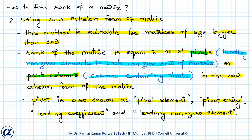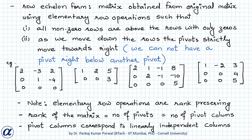The row echelon form of a matrix is obtained from the original matrix using elementary row operations such that all non-zero rows are above rows with only zero elements, and as we move down the rows, the pivots strictly move towards the right. This means we cannot have a pivot directly below another pivot.